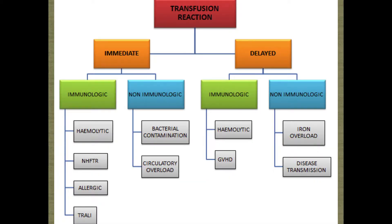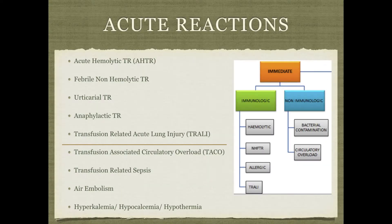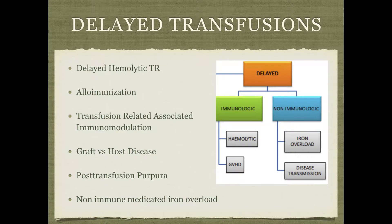Transfusion reactions are divided into two: immediate reactions and delayed reactions. We're just going to talk about the immediate ones. The immediate ones are divided into immunological and non-immunological. Immunological ones include acute hemolytic transfusion reaction, febrile non-hemolytic transfusion reaction, urticaria, anaphylaxis, and TRALI. The non-immunological include TACO, transfusion-related sepsis, air embolism, hyperkalemia, hypocalcemia, and hypothermia. We're not going to go over the delayed ones today.